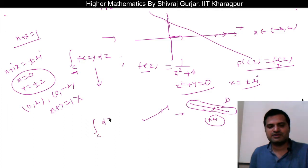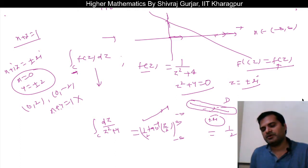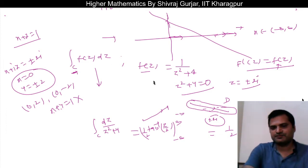Simple calculation: integrate dz divided by z square plus 4. This is nothing but tan inverse (z/2) times 1/2. Limit is from minus infinity, so 1/2 times (π/2 minus minus π/2). That is nothing but π divided by 2. So the answer is π/2.